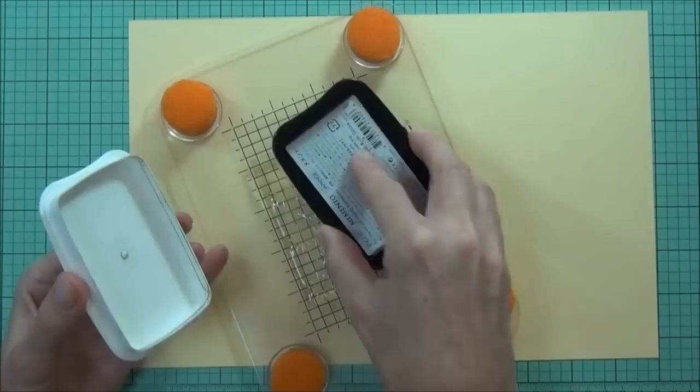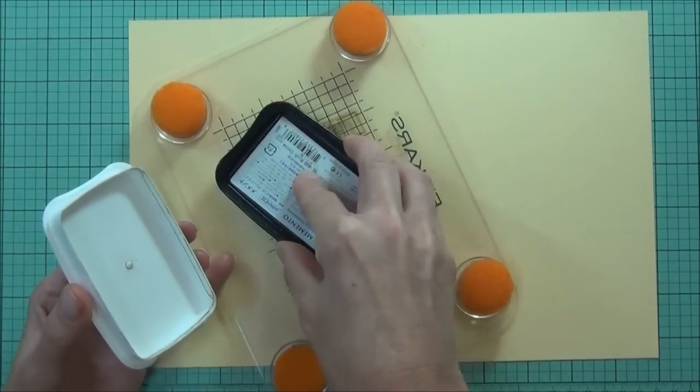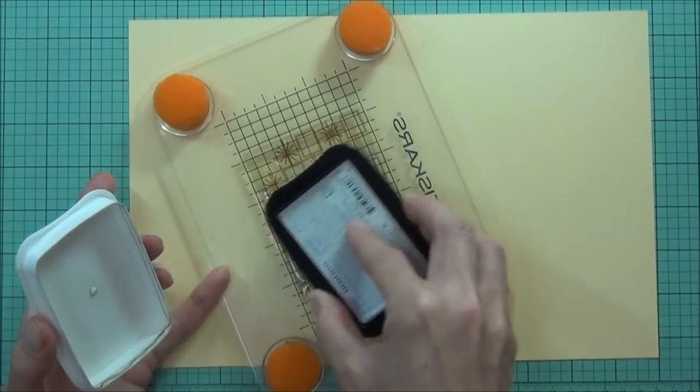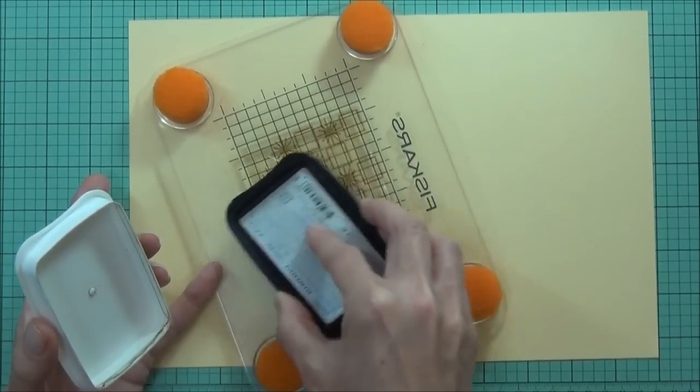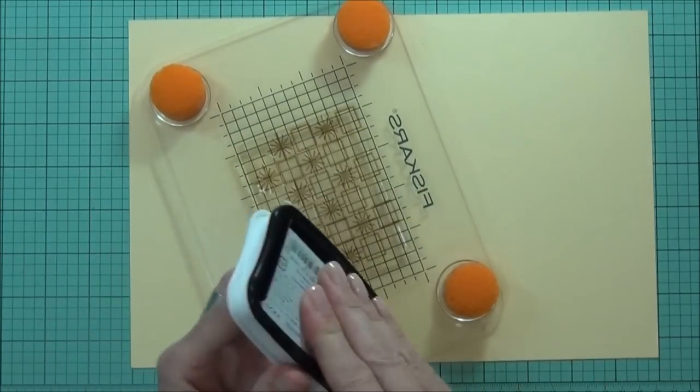I want to create my own retro looking background panel. I have some Memento Rich Cocoa ink and I'm going to be using some yellow cardstock.